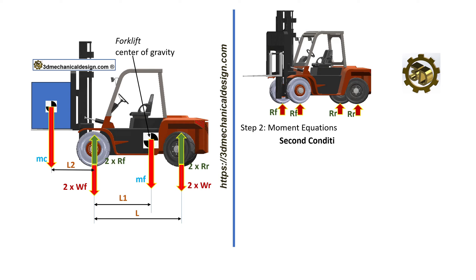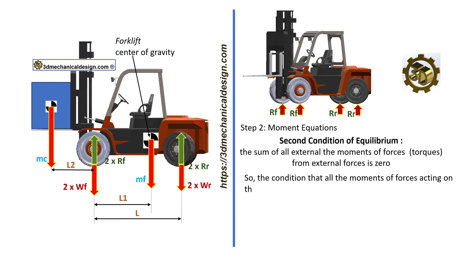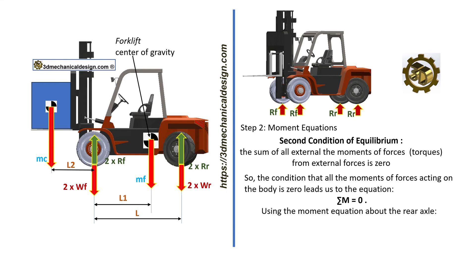We'll use the second condition of equilibrium. The sum of all external moments of forces, or torques, from external forces is zero. Using the moment equation about the rear axle, sum of moments equals zero: MF times (L minus L1) minus 2·RF times L plus MC times (L plus L2) equals zero.